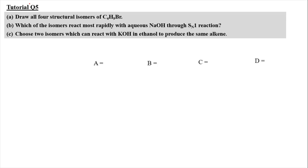For tutorial question 5, we have to draw all four structural isomers for C₄H₉Br. Structural isomers include chain isomers, positional isomers, and functional group isomers. We will draw the aliphatic haloalkane chain isomers and positional isomers. Starting with the four-carbon chain: first isomer has Br at carbon 1 (1-bromobutane), second isomer has Br at carbon 2 (2-bromobutane).